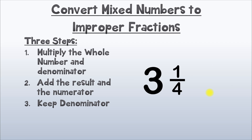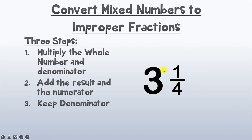Here's our second example. Remember to follow each of these steps, and if you do that every time, you'll be just fine. Step number one: multiply the whole number and the denominator. Our denominator is 4 and our whole number is 3. When we multiply 4 times 3, we get 12.